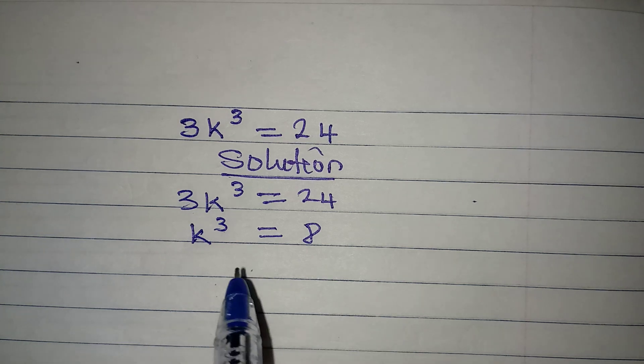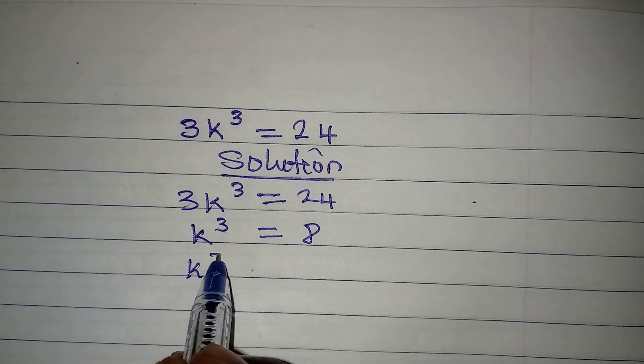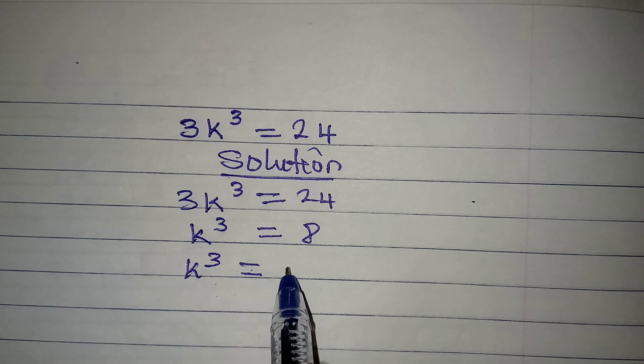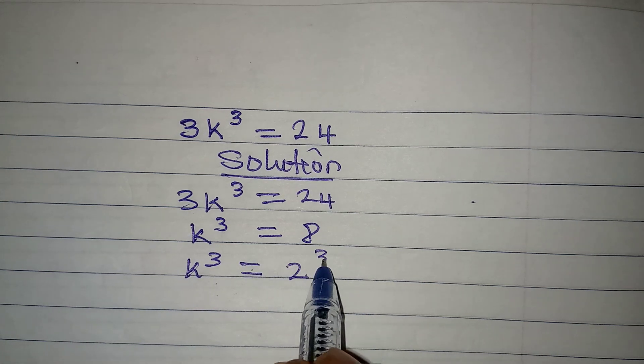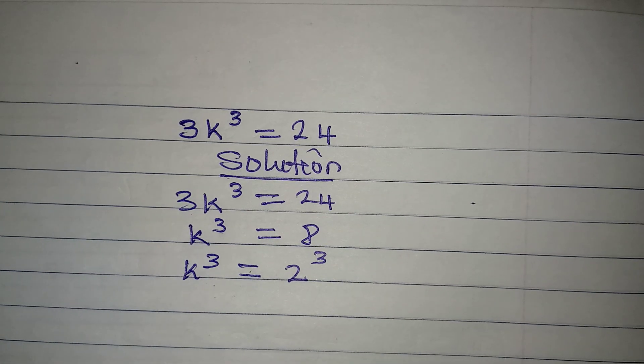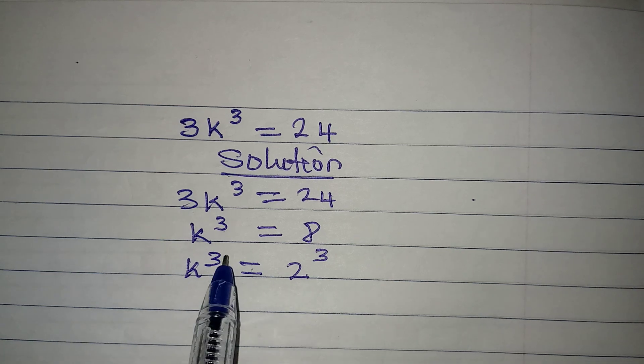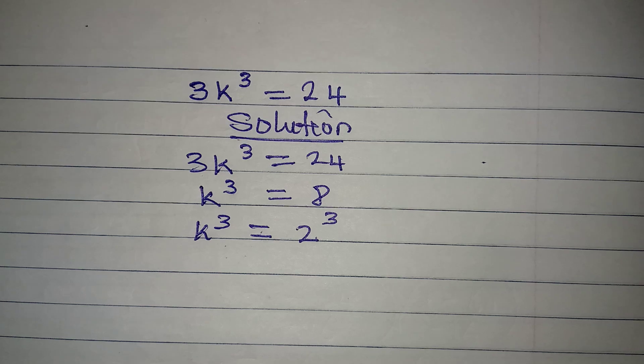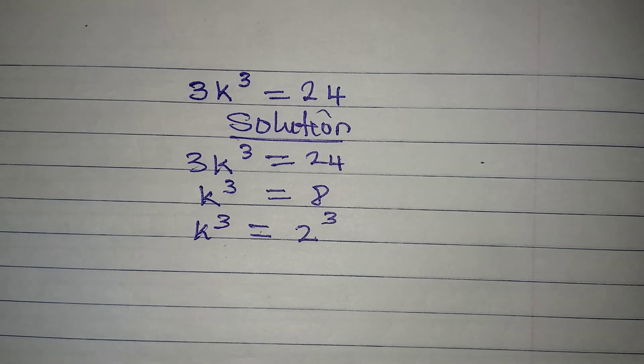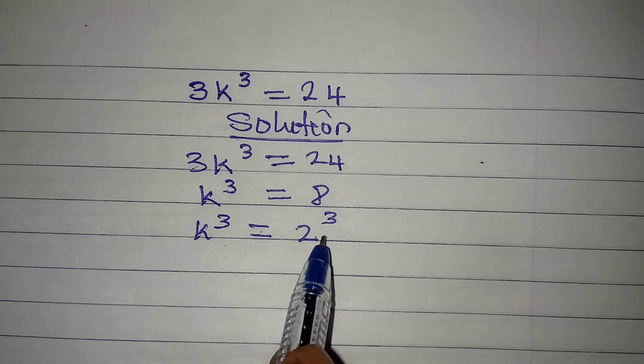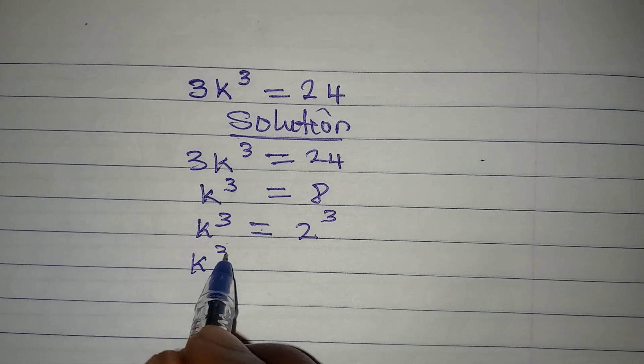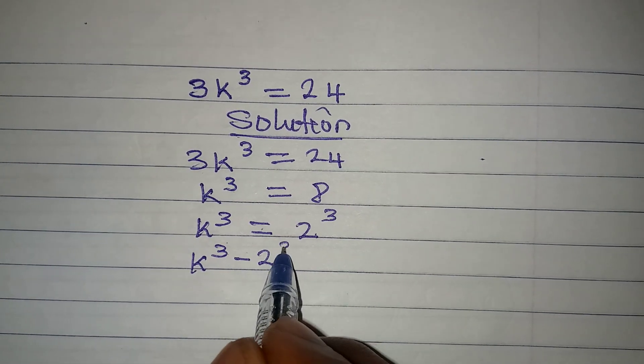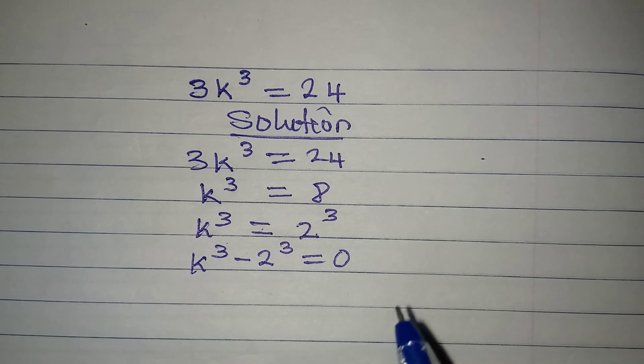Now from here, do you know that k³ here is the same thing as 2³? So from here now you can see we are having the same powers. Now for you to get all the solutions, you take this to the left. k³ - 2³ is now equal to 0.